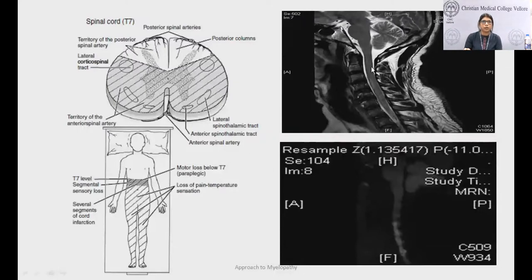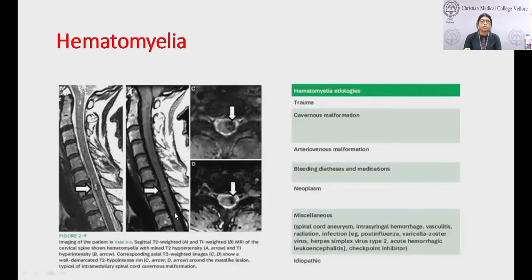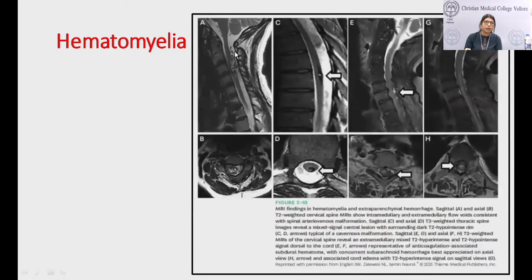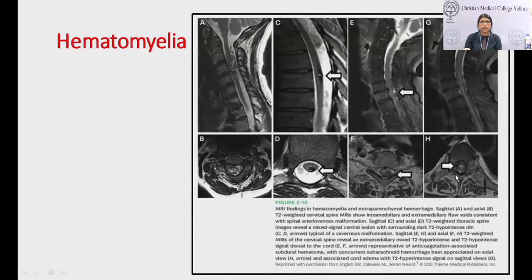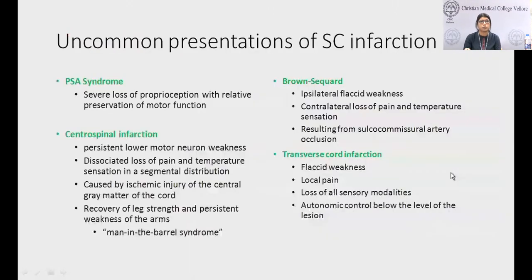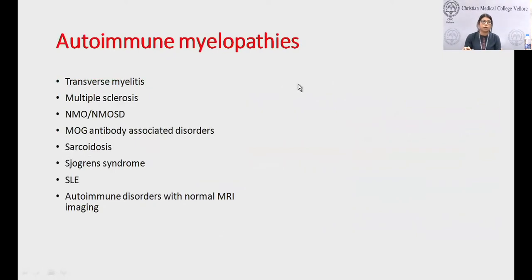Hematomyelia — bleed into the spinal cord — can be due to trauma, AVM, or anticoagulant use, appearing as heterogeneous intensity on MRI. This example shows a spinal AVM with multiple flow voids in the T2 sagittal of the cervical cord. There is also a small SDH and a small SAH in the thoracic cord — all anticoagulant-induced bleeds.